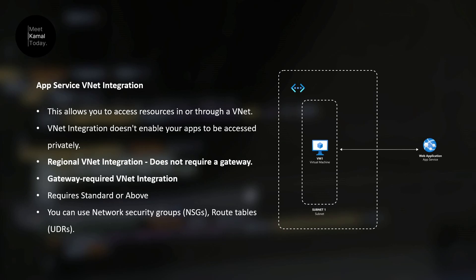What we are doing today is regional VNet integration because the VM, the virtual network, and the web application are all within the same region. If you want to go across regions, you can try gateway-required VNet integration. Your app service should be on the standard pricing tier or above to do this. After configuring this, you can still use virtual network features such as NSGs and routing tables.